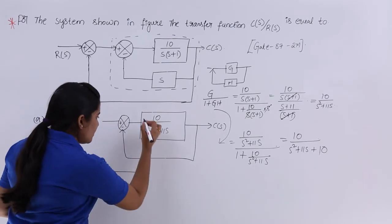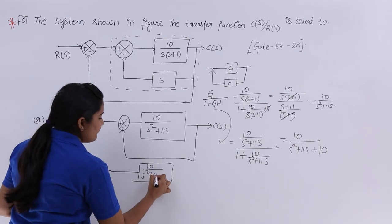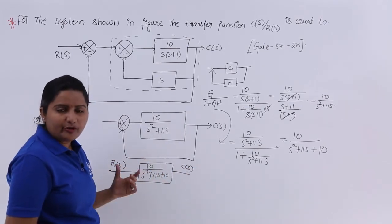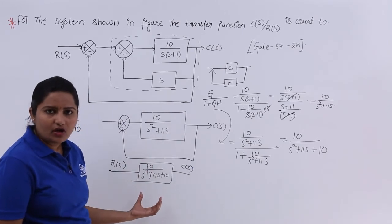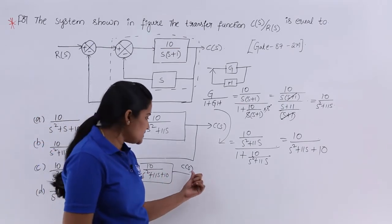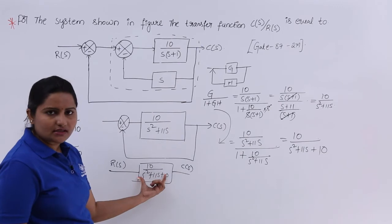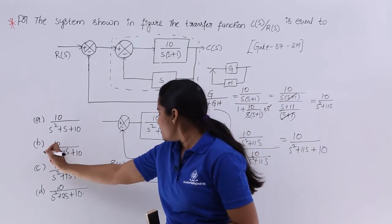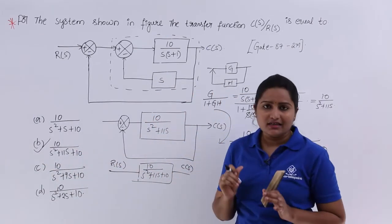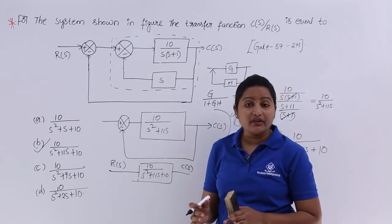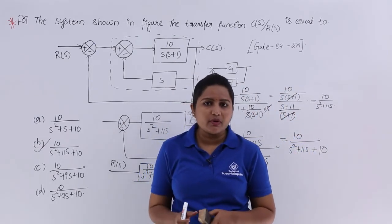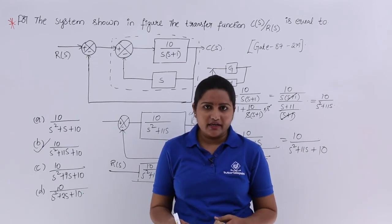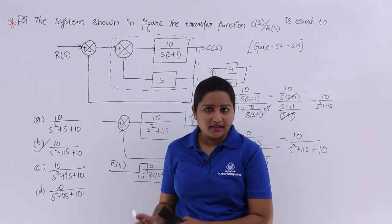After reducing both loops, the overall transfer function between input and output is 10 divided by S²+11S+10. This is the transfer function C(S)/R(S) of the given system. Looking at the options, the second option matches this result and is the correct answer. This GATE 1987 two-mark question can be solved simply by knowing the block diagram reduction formula G/(1+GH).